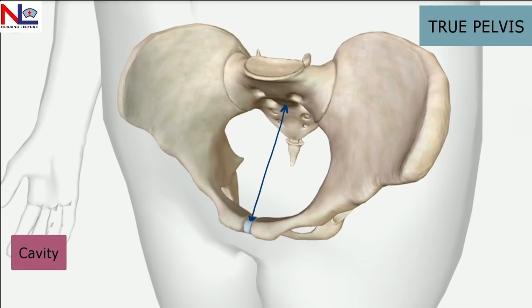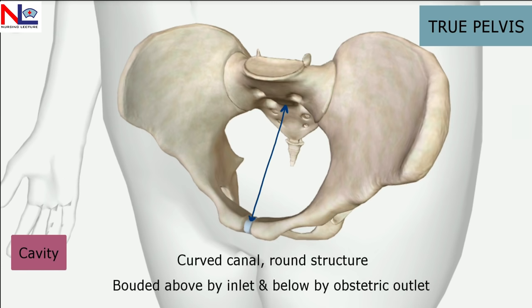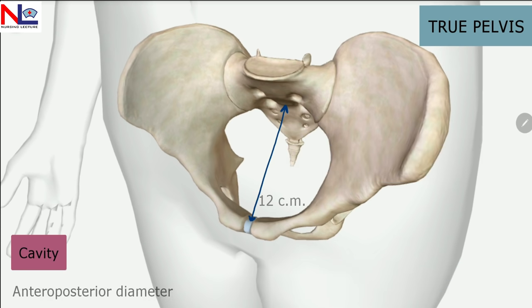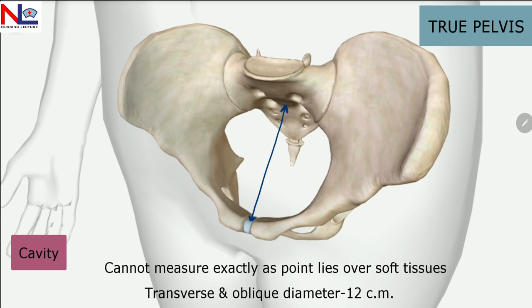The cavity forms a curved canal and is round in structure, bounded above by the inlet and below by the obstetrical outlet. Its anteroposterior diameter measures from the midpoint of the posterior surface of the symphysis pubis to the junction of the second or third sacral vertebra, measuring about 12 cm. The transverse and oblique diameters cannot be measured easily as the points overlie soft tissues, so roughly the overall diameter of the cavity is 12 cm.